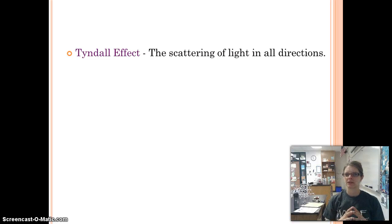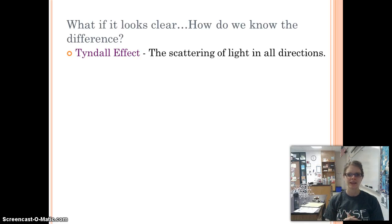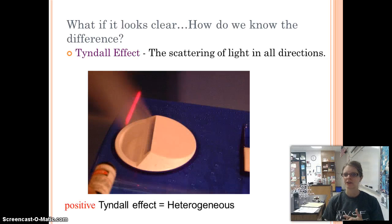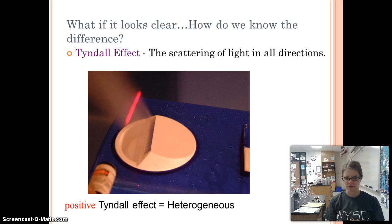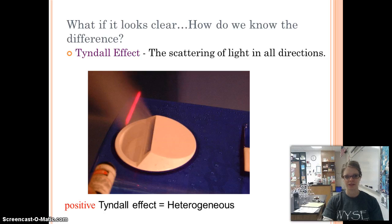How can we tell if something like clouds, smoke, or milk is heterogeneous or homogeneous when it looks the same everywhere? We use the Tyndall effect — the scattering of light in all directions. Looking at the image of a humidifier shooting out mist, if you shoot a laser through regular air you can't see it, but through the humid part you can see the laser beam, because the humid part is a heterogeneous mixture. The air part has a negative Tyndall effect — it's homogeneous. The humid part has a positive Tyndall effect — it's heterogeneous. So if you can see the laser, it's a suspension or colloid.